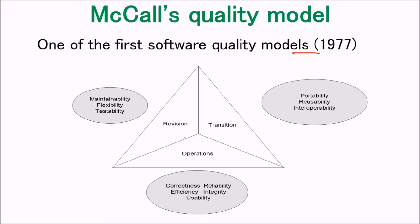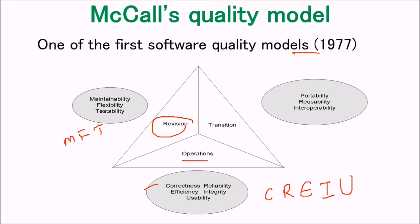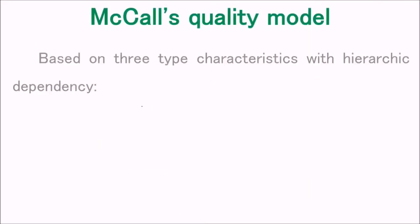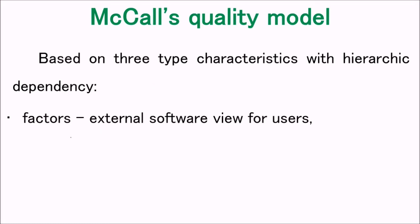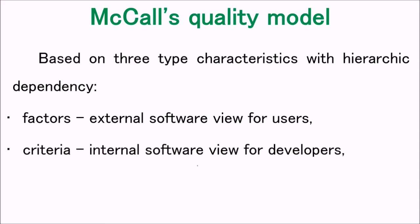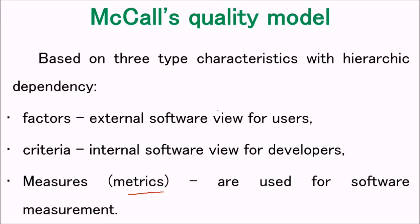McCall divided quality into three terms based on when the software is subjected to operations, revision, or transition. In terms of operation: correctness, reliability, efficiency, integrity, and usability. In revision: maintainability, flexibility, and testability. In transition: portability, reusability, and interoperability. Based on these three types with hierarchical dependency, we have factors — the external software view for users — criteria as the internal software view for developers, and measures (metrics) used for measurement.